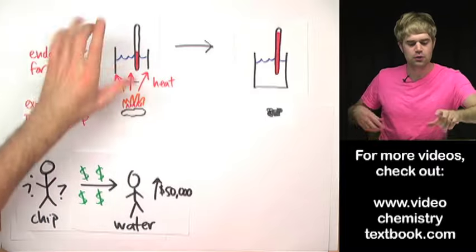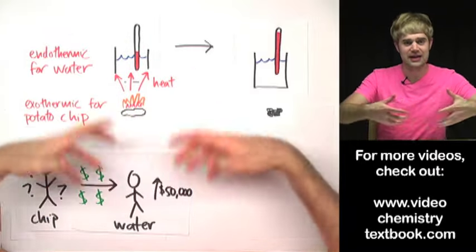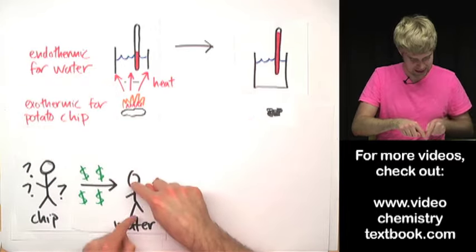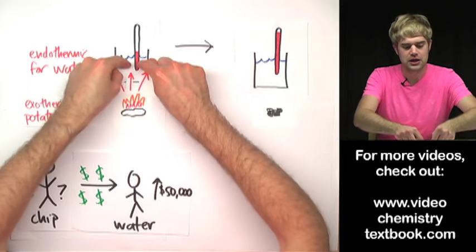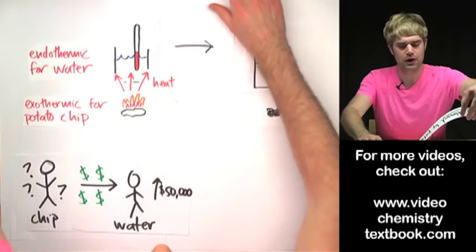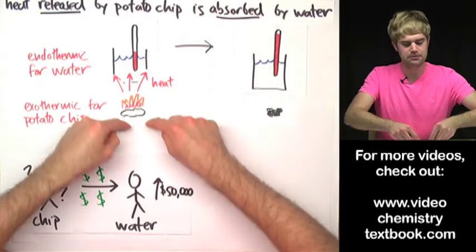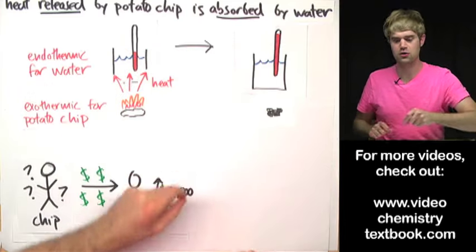So that is exactly what's going on here. By burning the potato chip, we make it give up all of its heat energy just like Chip has to give up all of his money and all of the heat energy goes into the water raising its temperature. So we can say here that all of the heat released by the potato chip is absorbed by the water.